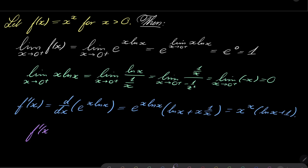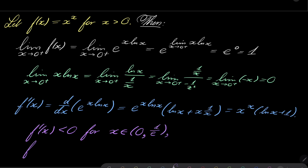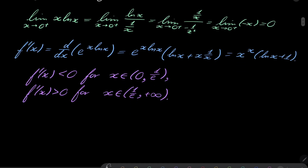Notice that f' of x is less than 0 for x between 0 and 1 over e, where 1 over e is the root of ln(x)+1=0. Likewise f' of x is greater than 0 for x from 1 over e to plus infinity. So our function looks something like that — it attains its minimum at 1 over e, and at x equals 1 it of course attains the value of 1. The graph looks something like that.